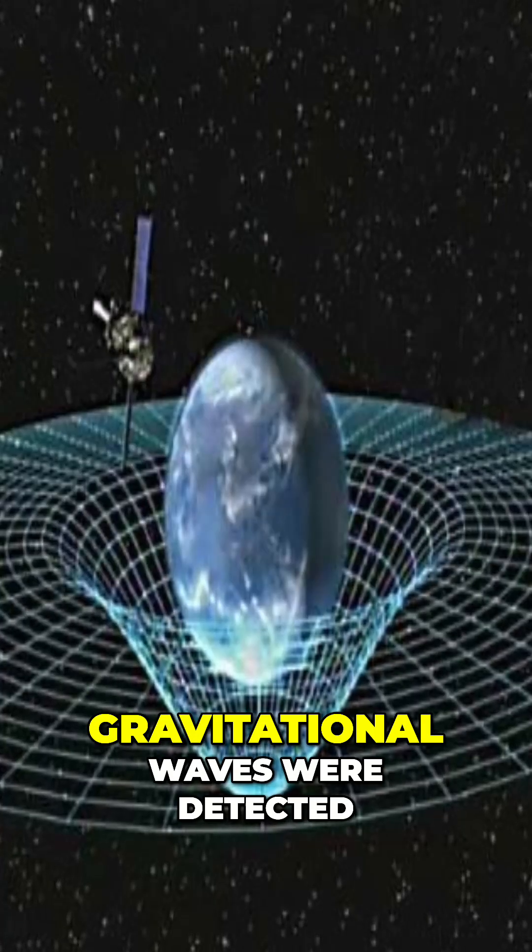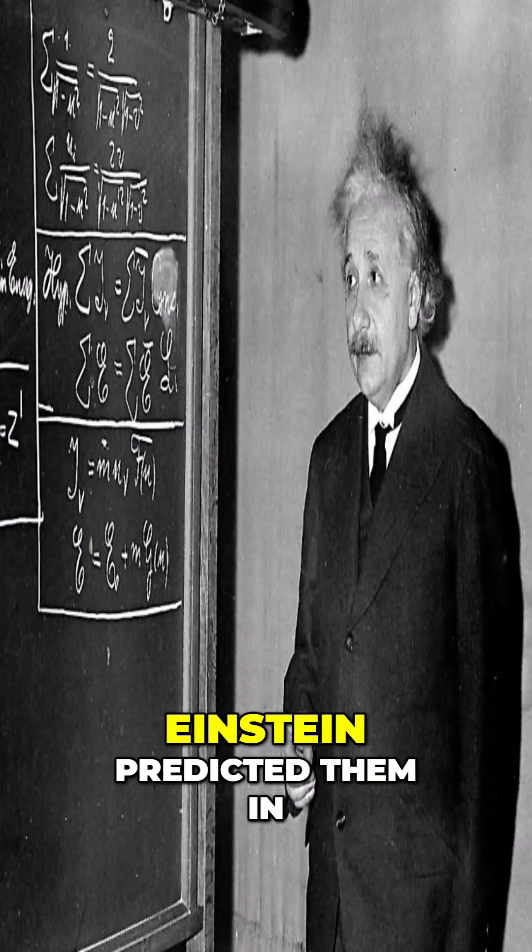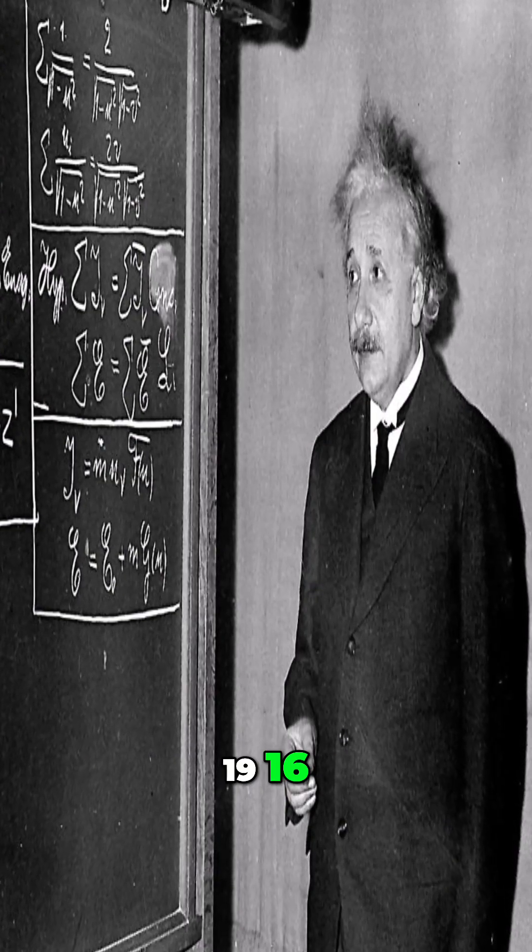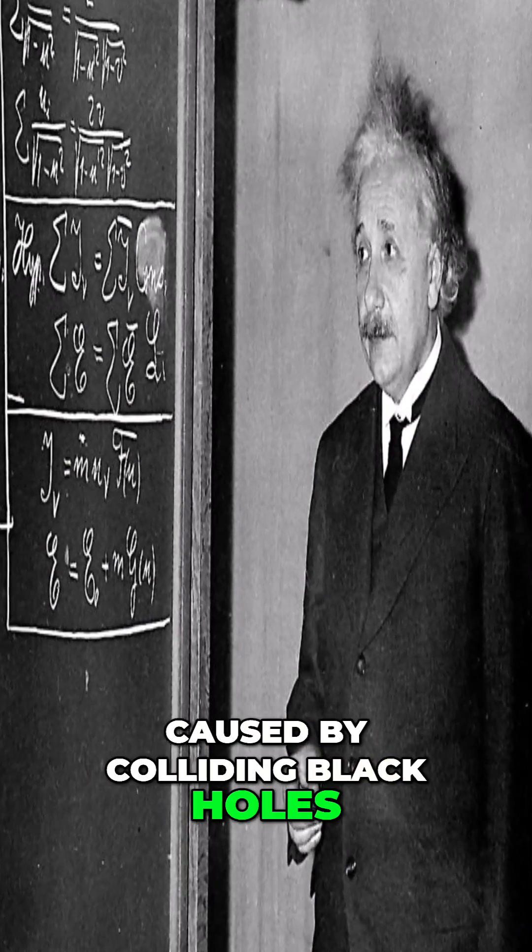3. Gravitational waves were detected for the first time in 2015. Einstein predicted them in 1916, but scientists finally caught ripples in space-time caused by colliding black holes.